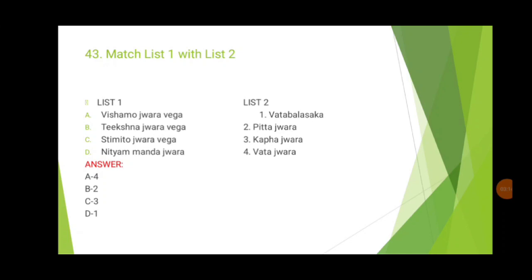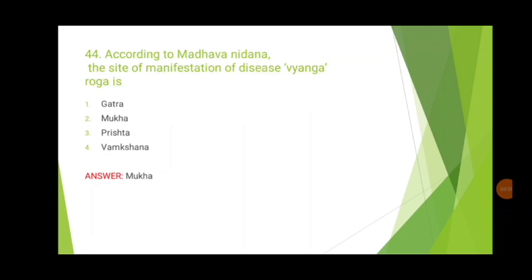The 43rd question is again from the context of jvara — study jvara from all points in Charaka, Sushruta, and Madhav Nidhana. The four options are vishamma jvara vega, tikshna jvara vega, sthimita jvara vega, and nityam manda jvara. Based on natural characters of doshas: vishamma/unpredictable frequency is vata dosha, tikshnata is pitta, and sthimitam is kapha. Nityam manda jvara is vata balasadam.